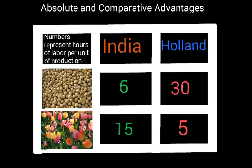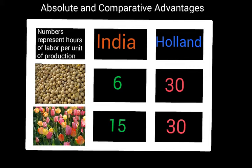Now you might ask: what would happen if one country produces both products more efficiently? In our example, India is more productive in soybeans and Holland in tulips. But let's hypothetically say that India would be more efficient in making both products. To set up this scenario, we're going to change the five hours that Holland was taking to make tulips to 30 hours. So now should the two countries still trade, since India has the absolute advantage in making both products? Let's take a look at the same numerical example to find out if there's any benefit for these two countries to trade. First we have to determine which product each country should produce.